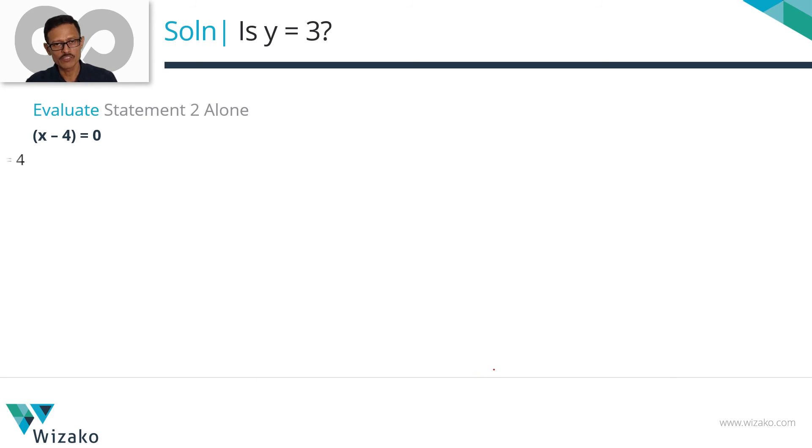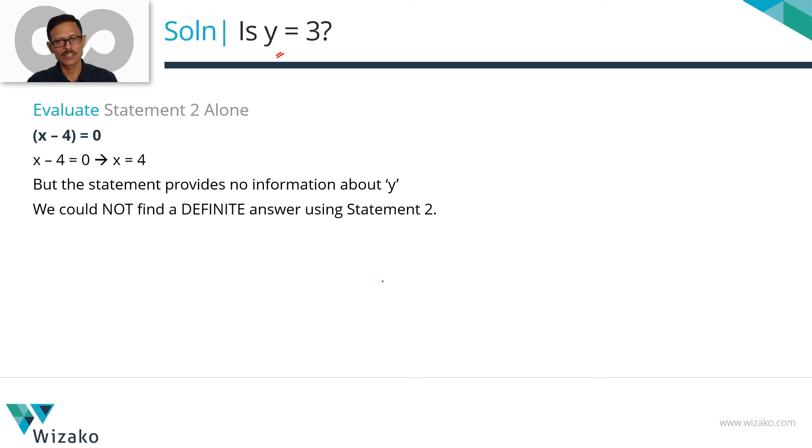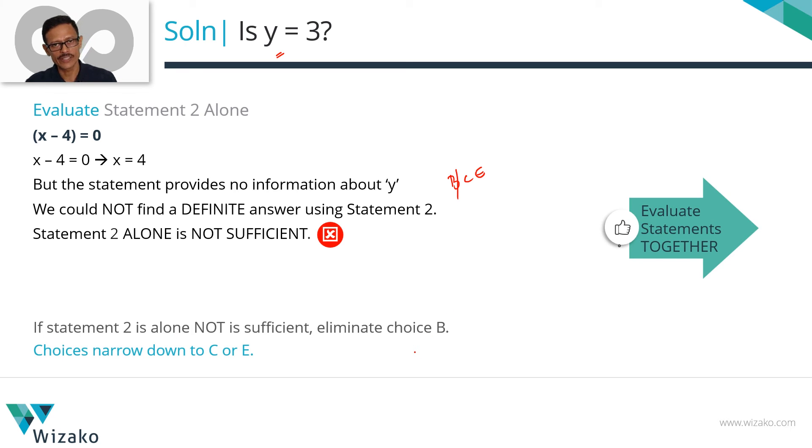Let's look at statement 2 alone. (x-4) equals 0, which means x equals 4. This question is about y. The information given from statement 2 is only about x. We know nothing about y from the statement. So statement 2 alone is not sufficient. It's quite easy to eliminate this statement. 2 alone is not sufficient. At the end of evaluating statement 1, our answer choices were down to B, C or E. 2 is not sufficient. Eliminate choice B. We are down to C or E.